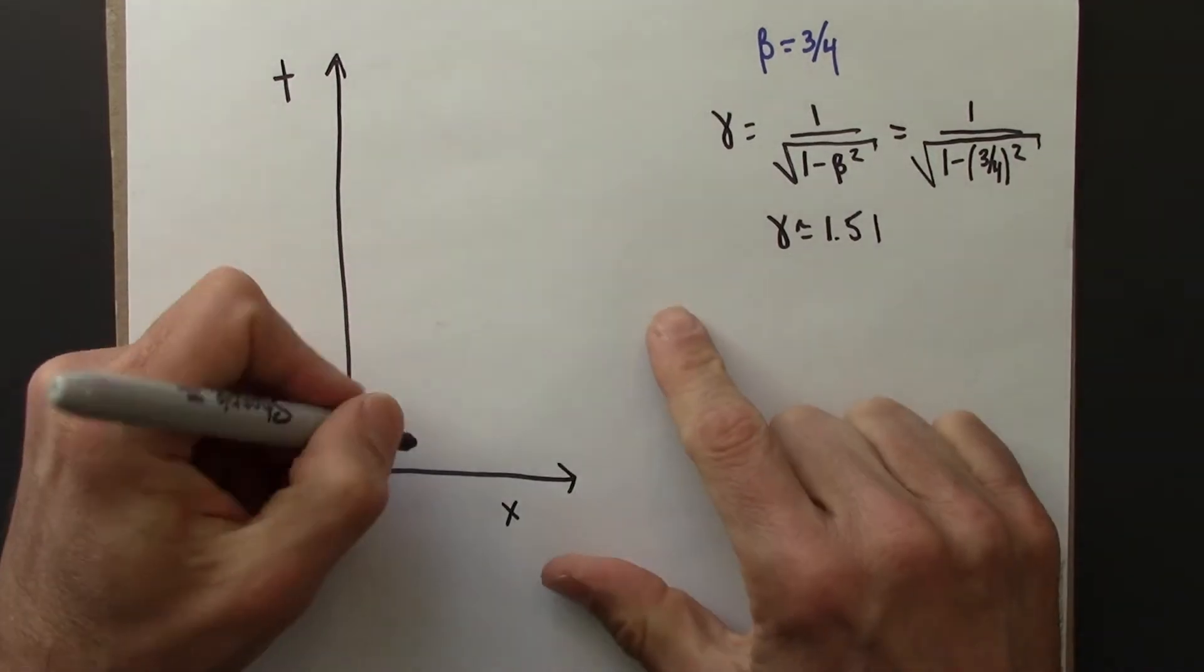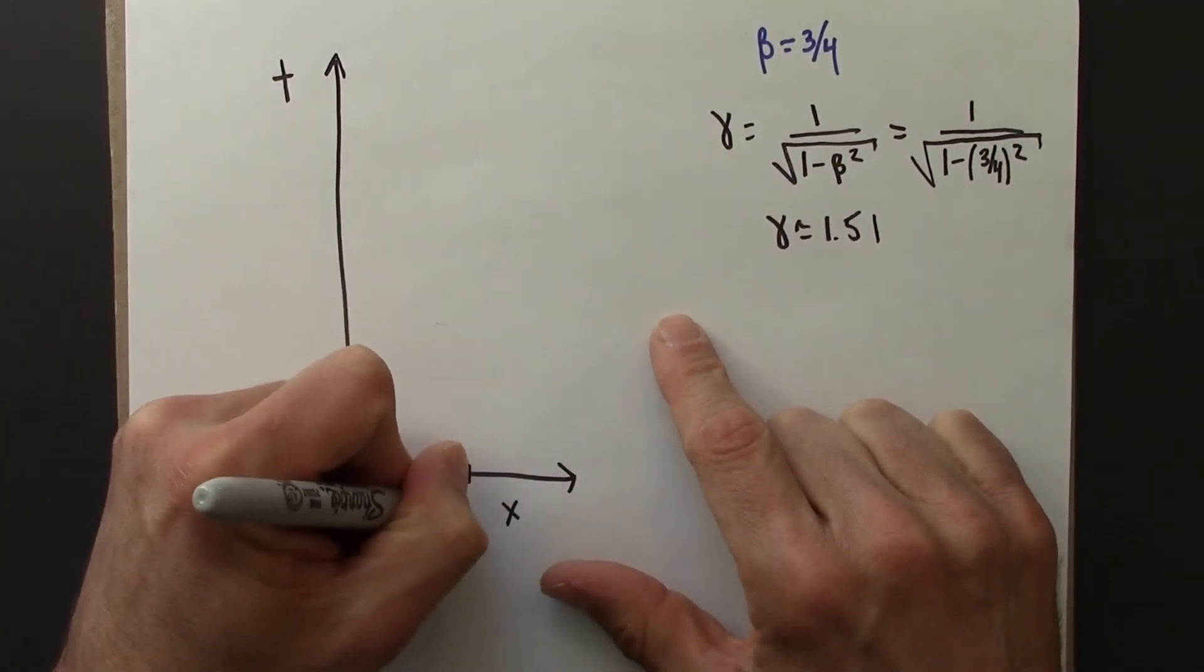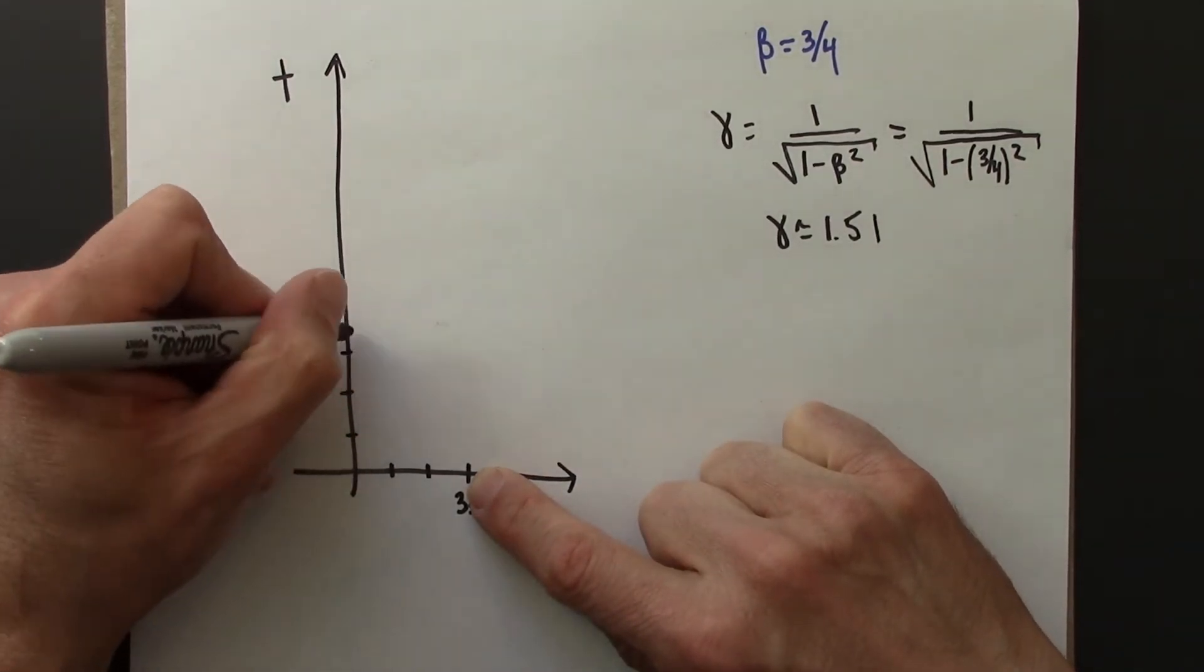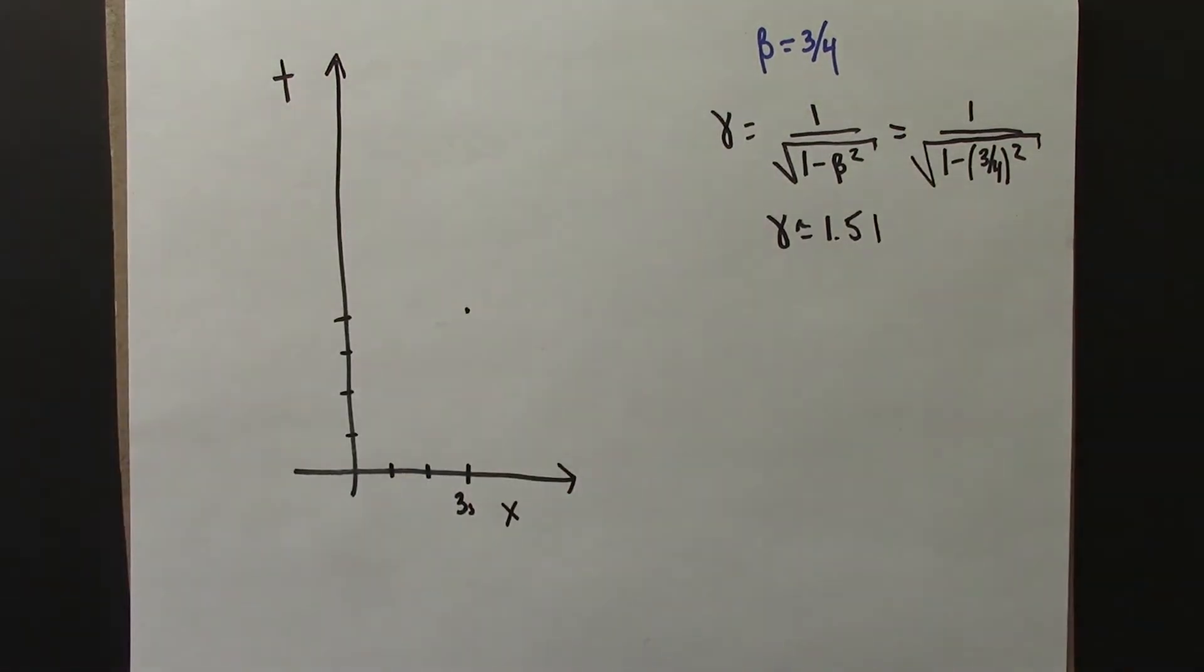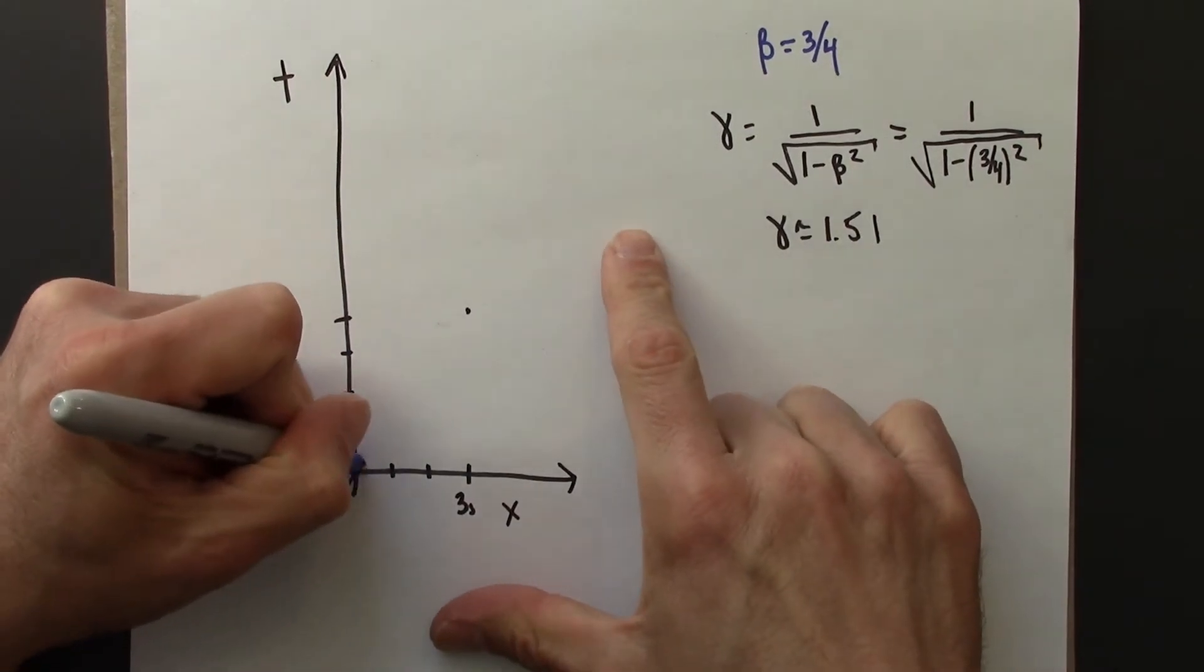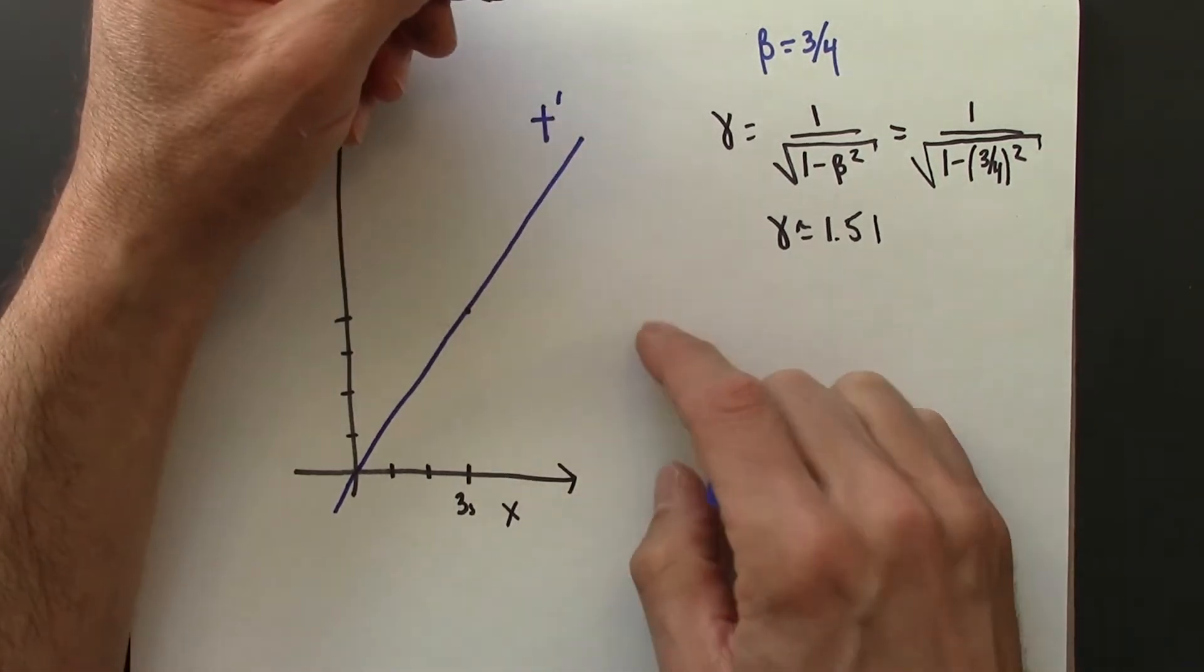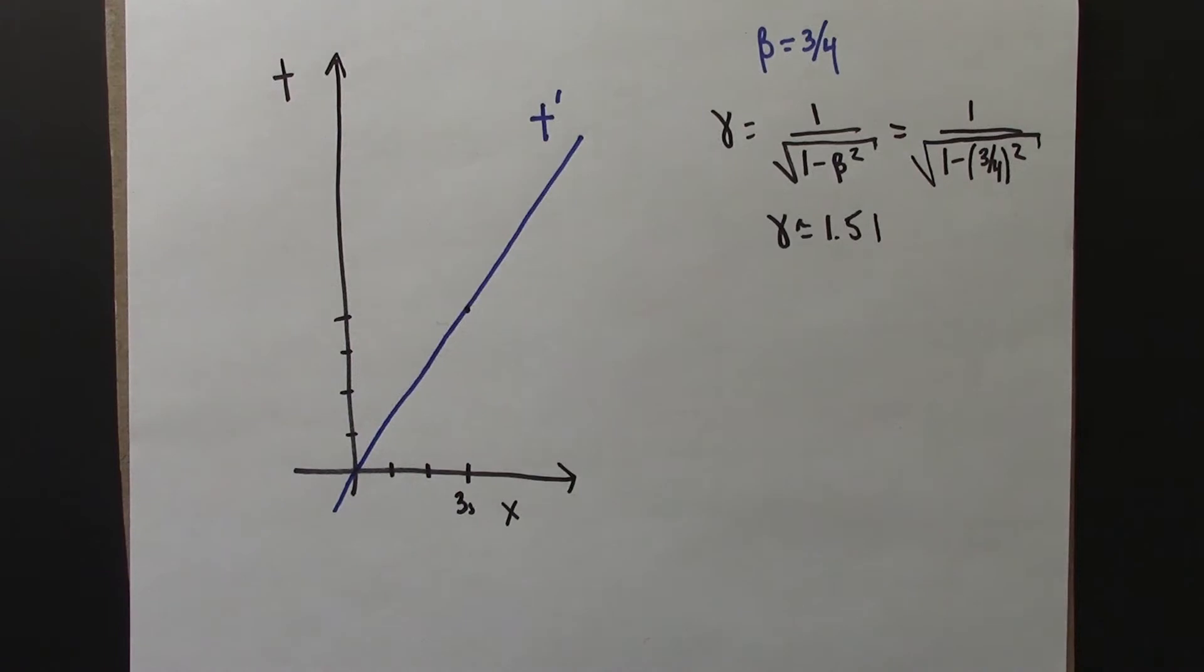So the clock travels 3 seconds of spatial distance in 4 seconds of time. So this is going to look like this. So this would be my t prime axis, slope of 4 over 3.